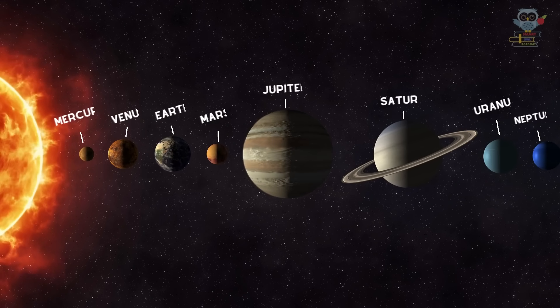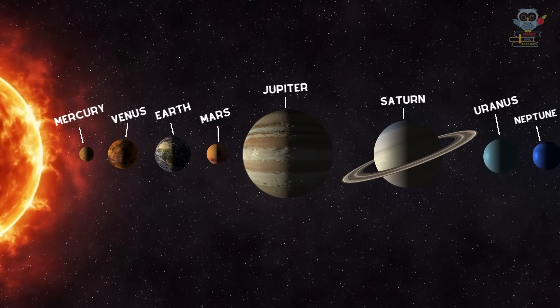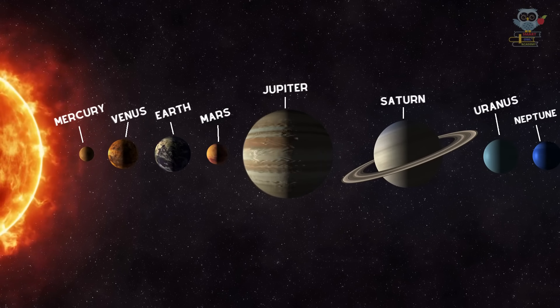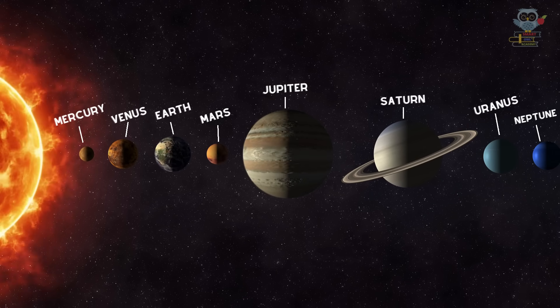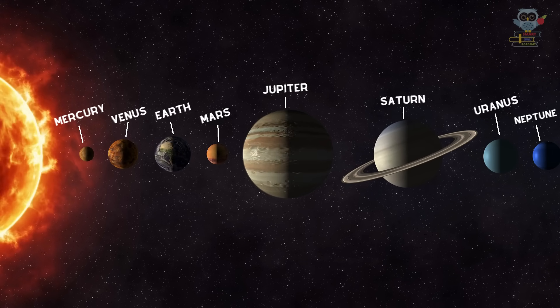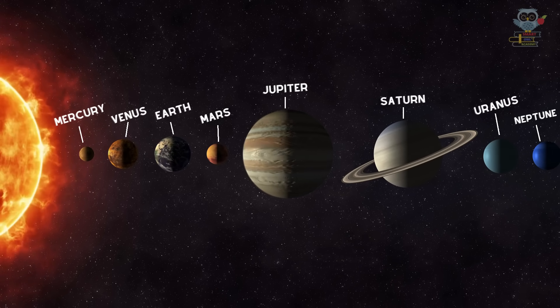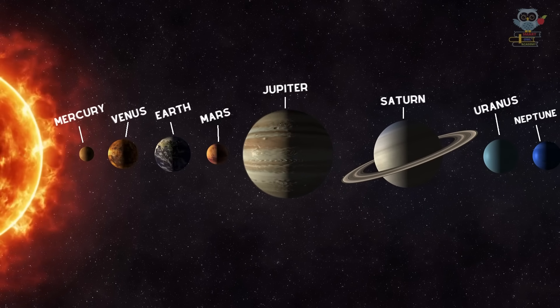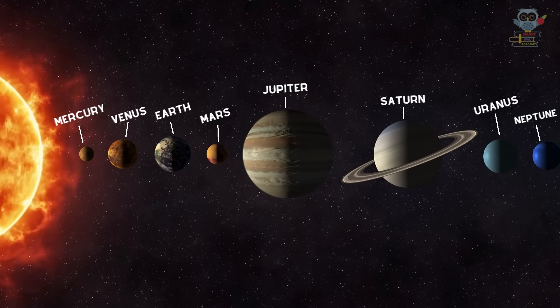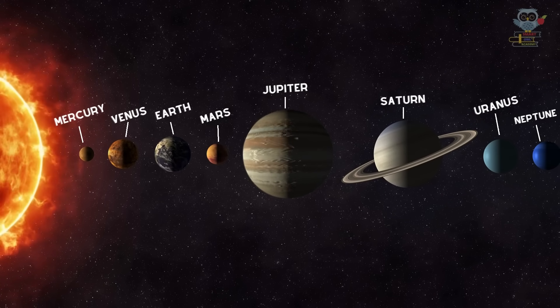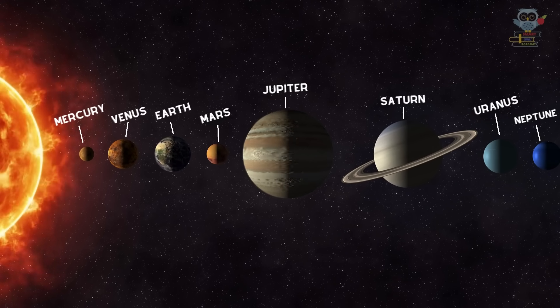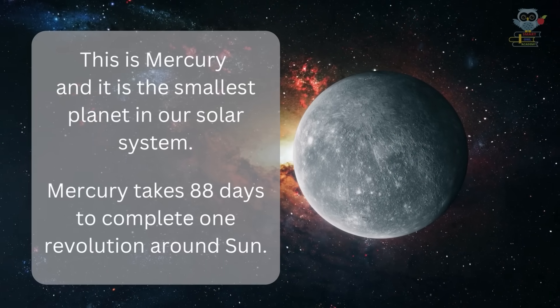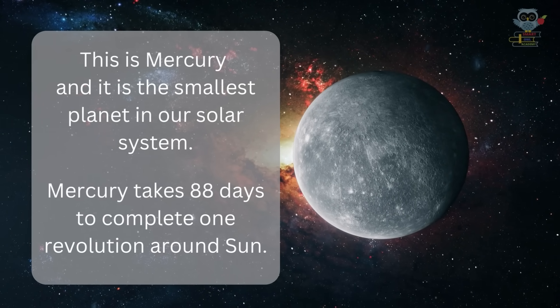There are eight planets in our solar system, and now we are going to learn about these planets. First is Mercury, second Venus, third Earth, fourth Mars, fifth Jupiter, sixth Saturn, seventh Uranus, eighth Neptune.